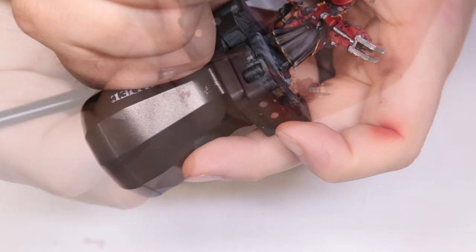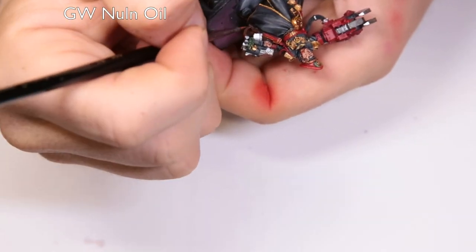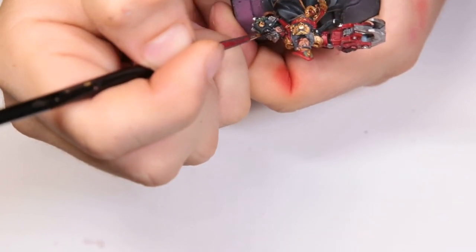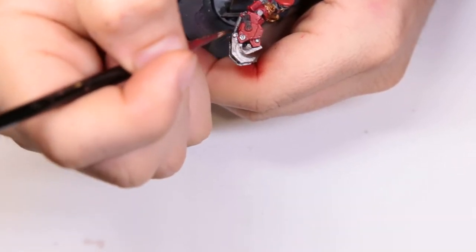Continuing with the washes, next we're moving on to Nuln Oil. We're just hitting all of his metal bits. We're hitting his grabber, we're hitting his barrel of his gun. Any metal bits throughout his body. There's not too terribly many, but just getting the attention they need.